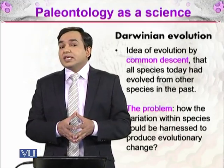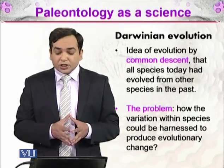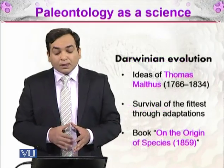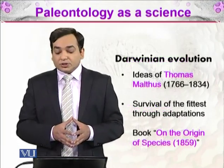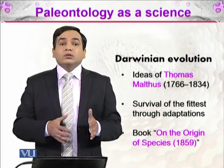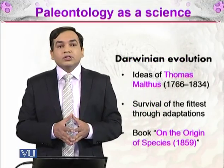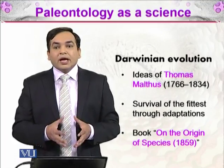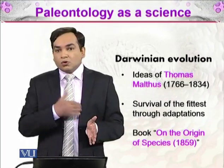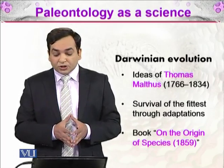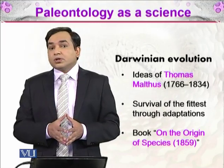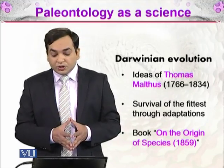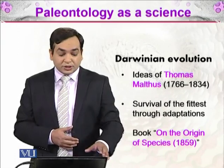The problem with Darwin's ideas was that he didn't know how variation between species could be harnessed to produce evolutionary change. But after later studies, such as the work of Thomas Malthus, 1766 to 1834 — an economist well versed in human population trends — Darwin got the idea of how population increases relative to food supply, creating competition. In that competition, only the fittest survive. Survival of the fittest through adaptation was Darwin's key idea, and he wrote the book On the Origin of Species in 1865.